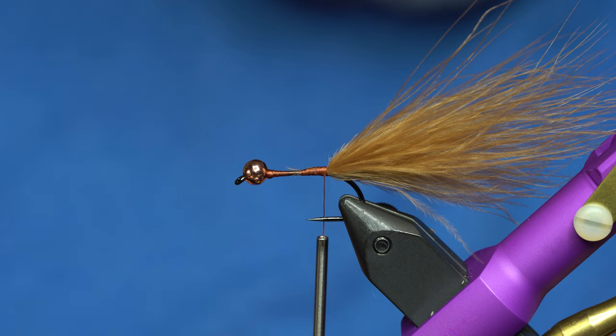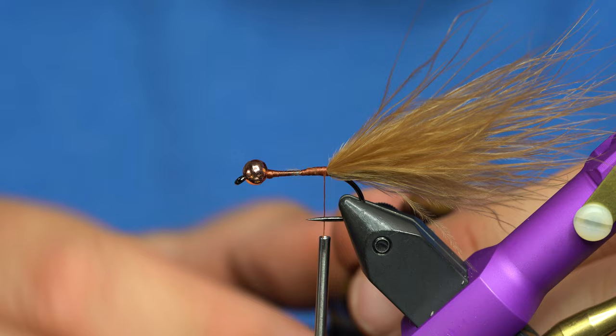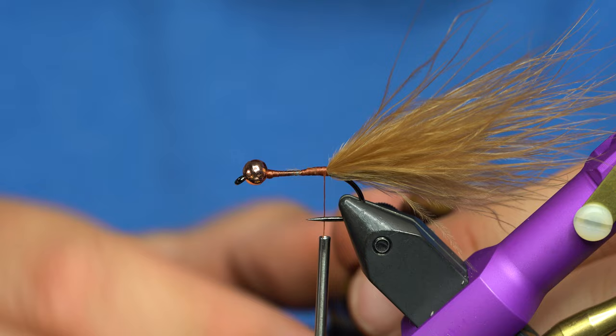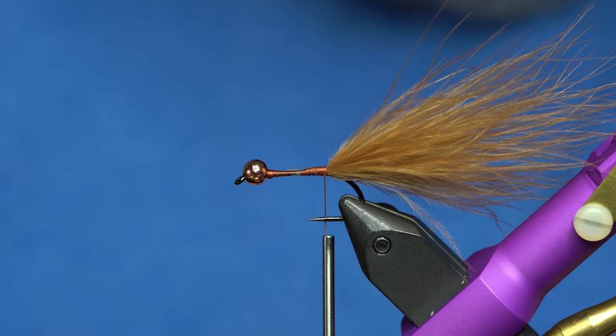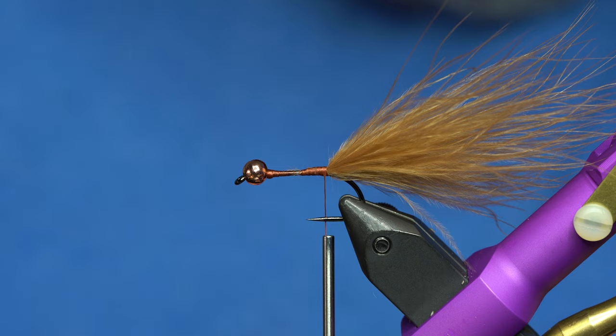You can reverse palmer this if you want. I'll just show you the standard bugger tying method. I've got a cool color here. This is a whiting bugger hackle patch that we get from Whiting. This is a custom dye job that only we have, and it's called Golden Olive. So, I'm mixing the Golden Olive with the tan. It's a good mix together. It's kind of sculpany.